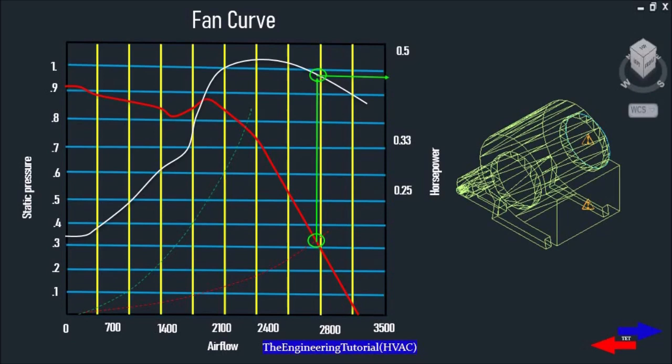I mentioned, a fan curve always slopes from upper left down to lower right. The intersection of the system curve represents the performance of the fan. In this case, 2700 CFM of air at a static pressure of 0.9 inches of water column. Therefore, we're going to get the most airflow when there is the least resistance. On the vertical left axis, at zero resistance, we're going to get the most airflow. So